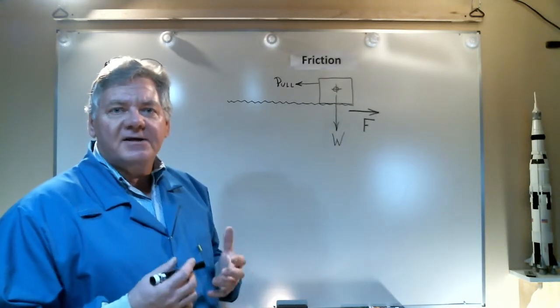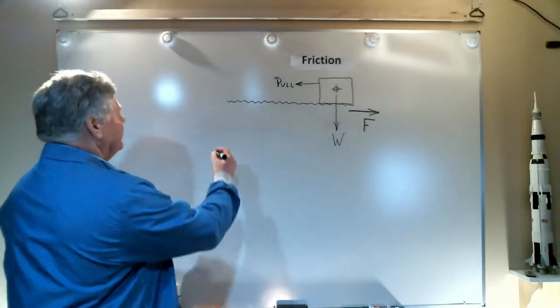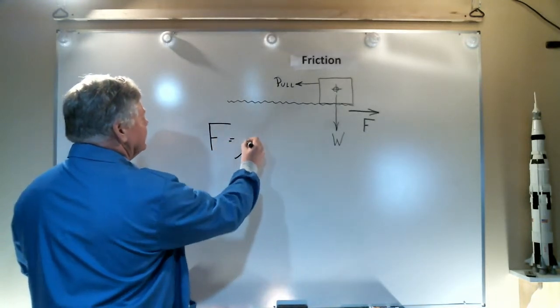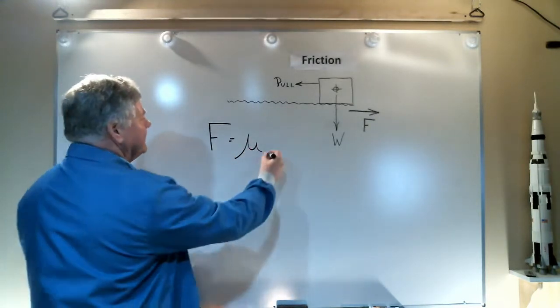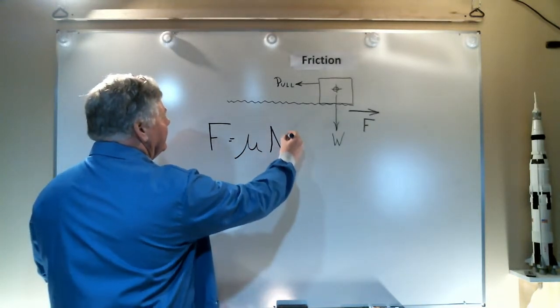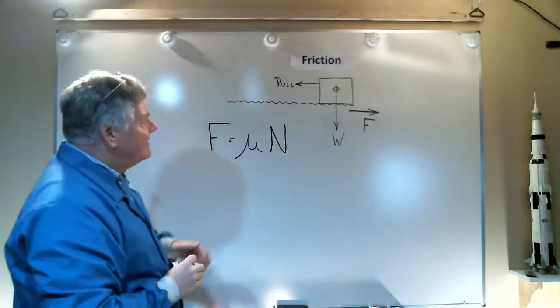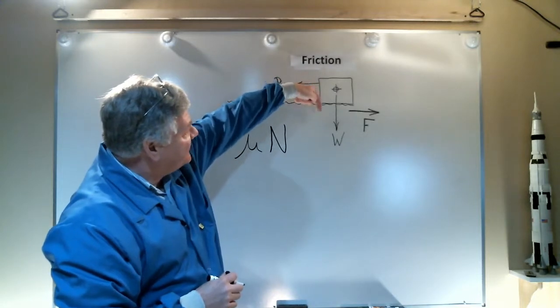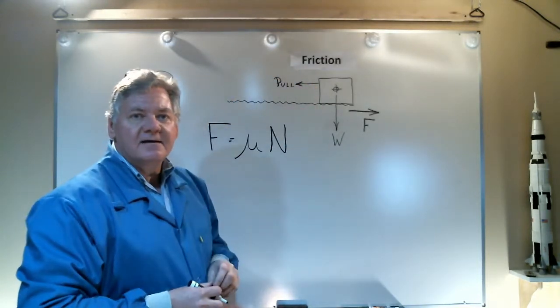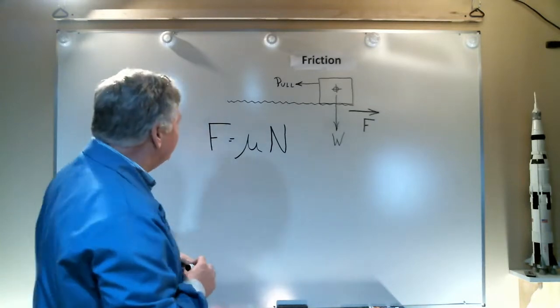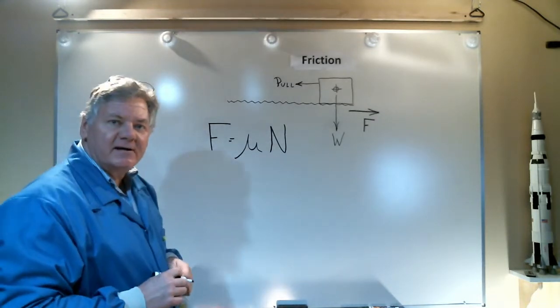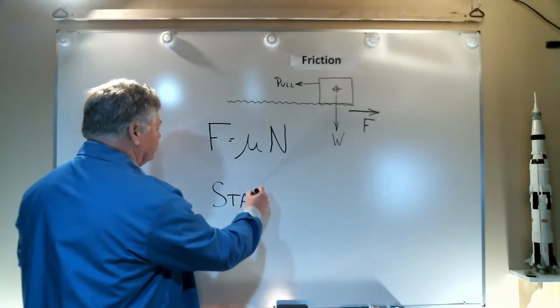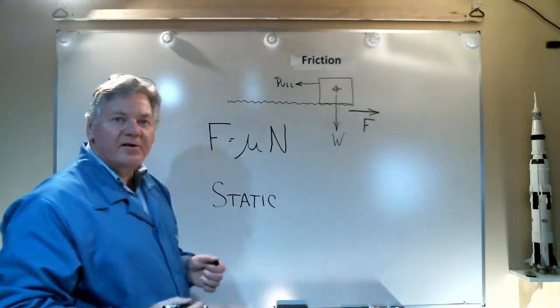The equation that governs friction is relatively simple: the frictional force equals the coefficient of friction times the normal force. F = μN. Since my surface in this case is horizontal, the normal force acting through the surface is actually going to be the weight, so N equals W in my case. There are two types of friction I need to consider: static and dynamic.